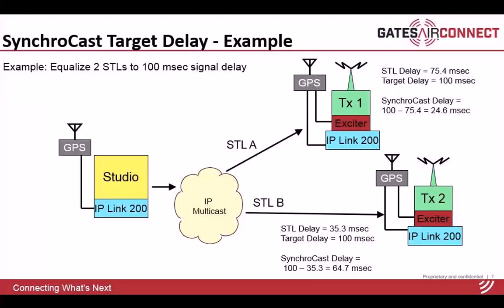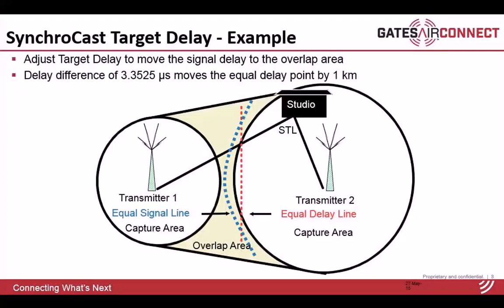The key point is that once this delay is set, if there is any variation or change in the link or network delay, the internal SyncroCast delay will be automatically adjusted up or down so that the target delay at the IP-Link output does not change. In another example, when the equal delay line does not overlap the equal signal line in the overlap region, causing interference, the target delay value between the two transmitter sites can be offset to move the equal delay line over to the equal signal line to overcome the interference.